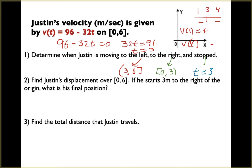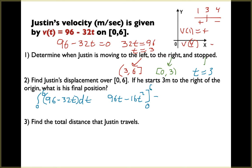To find Justin's displacement over [0, 6], he starts three meters to the right of the origin. We integrate the velocity function manually: the integral from 0 to 6 of (96 minus 32t) dt. Taking the anti-derivative gives 96t minus 16t squared, evaluated from 0 to 6. That's 96 times 6 minus 16 times 36, which equals 576 minus 576, giving a displacement of zero meters.